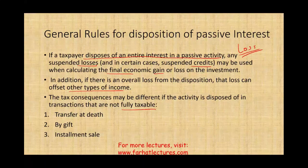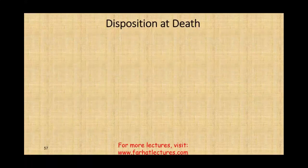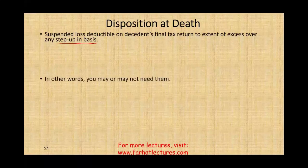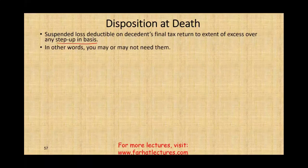This topic a lot of teachers don't cover, so you may not be covering it, but I suggest you view it because it will help you prepare for future topics such as basis — step-up basis, transfer of basis, and so on. Let's start with the first scenario: disposition at death. What happens when you pass away and you have suspended losses in a passive activity interest? The suspended loss is deductible on the decedent's final return to the extent of the excess over any step-up in basis. In other words, you may or may not use those losses depending on whether they would help produce a step-up in basis.